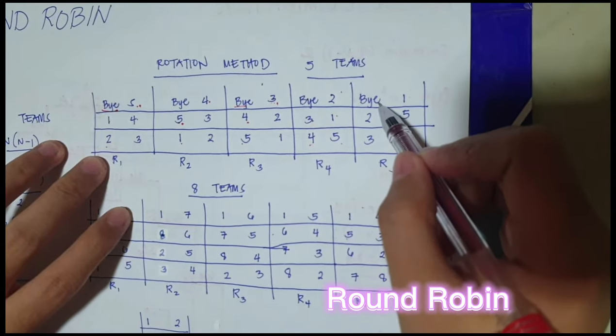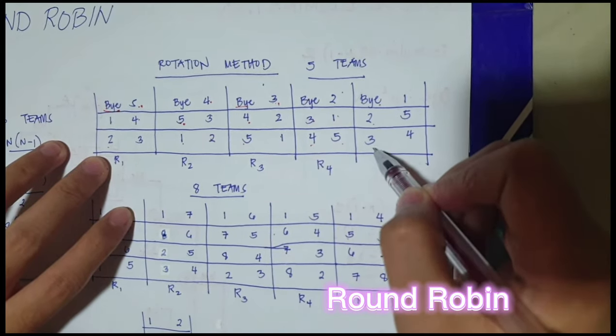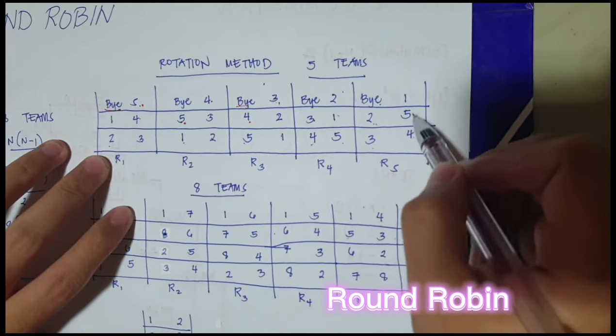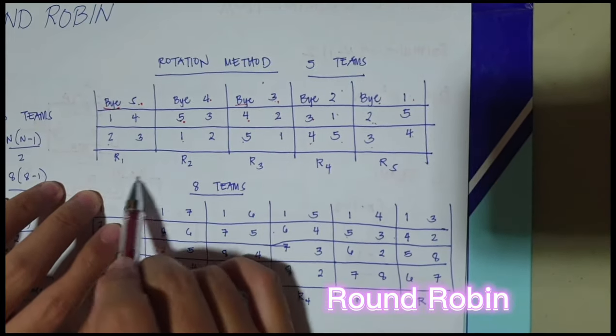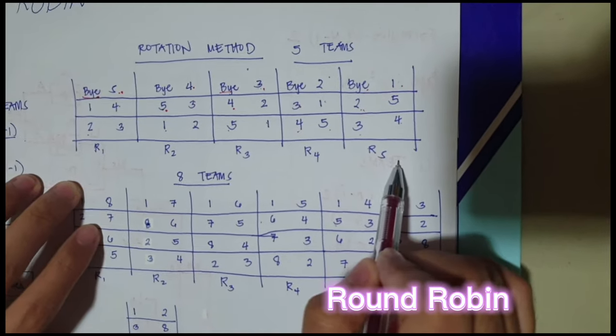And then for the last round, by, 2, 3, 4, 5, 1. So all in all, there are 5 rounds in 5 teams.